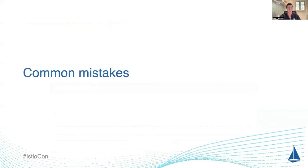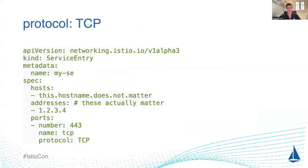Now I promised some common mistakes, so here we go. I cannot stress this one enough: if there is a service entry with protocol TCP, unless you provide IPs or CIDR blocks in the addresses field, these service entries will capture all traffic on this port, regardless of hostname. There are no hostname headers for traffic defined as TCP in Envoy, so hostname does not matter.